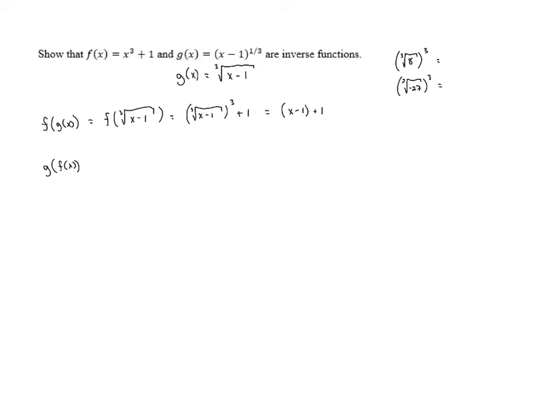The cube root of 8 is just 2, and then 2³ gives us 8. The cube root of -27 is -3, and if we cube that, -3 × -3 × -3, we get -27.